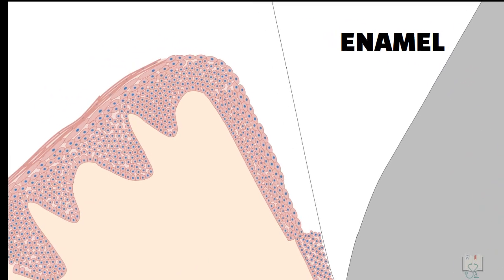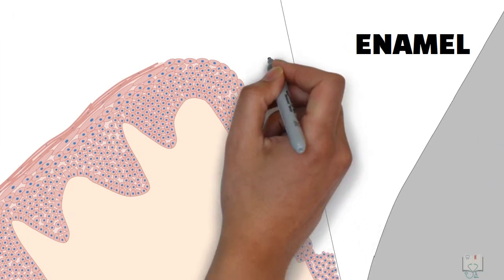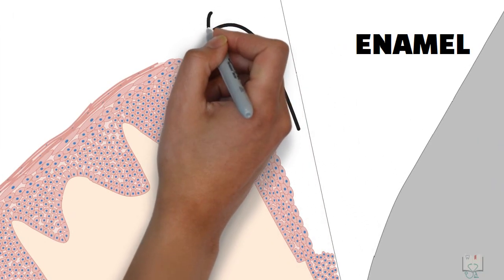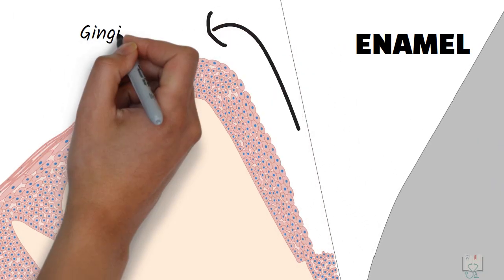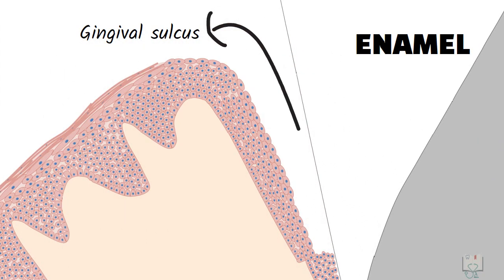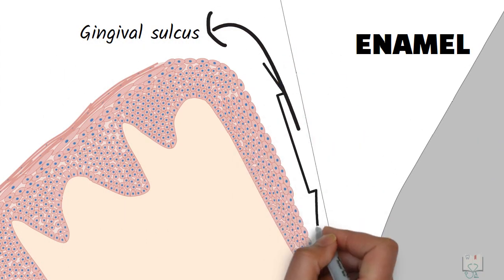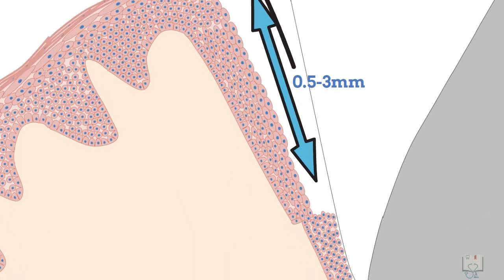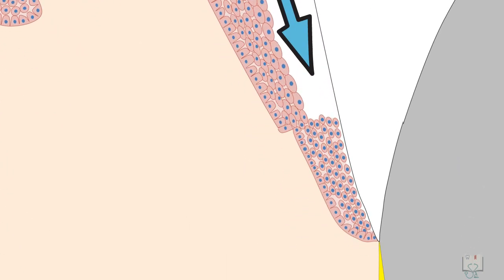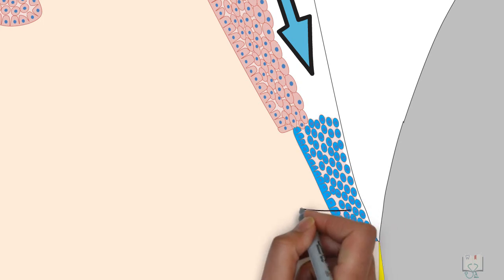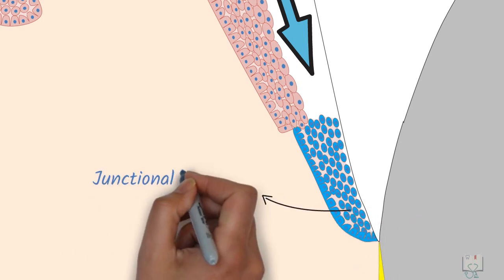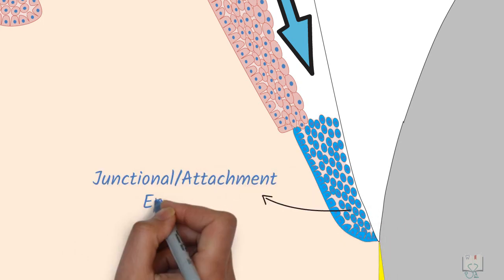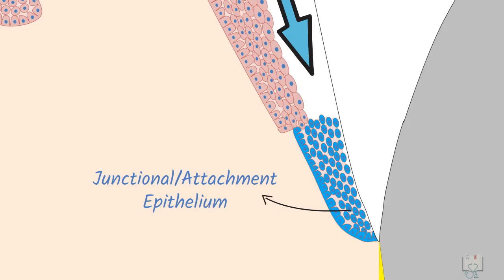The invaginated area between the tooth and the gingival tissue is called the gingival sulcus. On an average, it has a depth of 0.5 to 3 mm. The floor of the sulcus and the epithelium cervical to it, which is attached to the tooth surface, is called junctional epithelium or attachment epithelium.